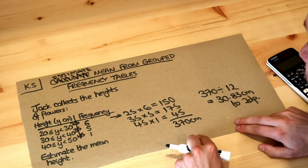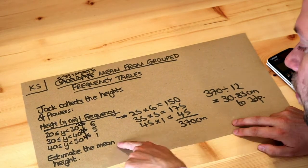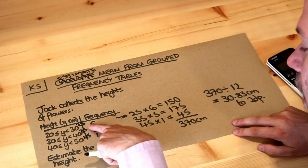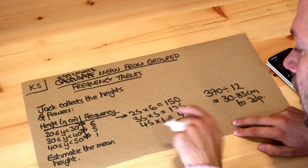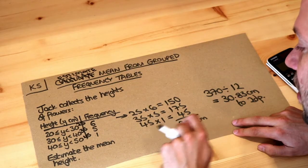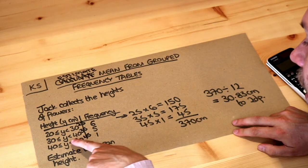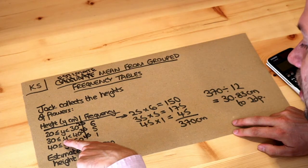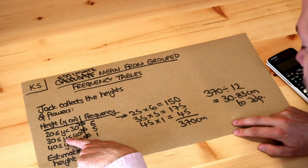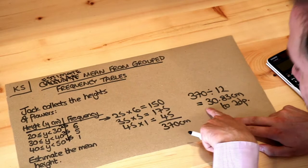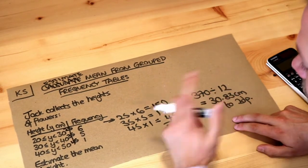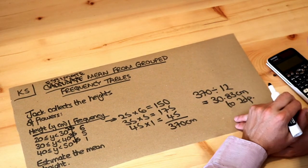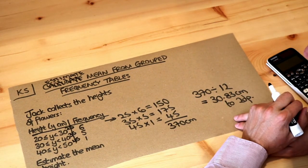That's our estimate of the mean height of a flower. Always check whether your mean sounds sensible. We've got more flowers at the lower height end than the higher end, so we expect the mean to be somewhere below 35 — and indeed it is, at 30.83. So that seems like a sensible estimate.